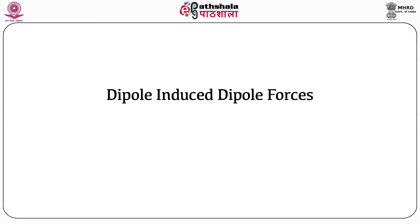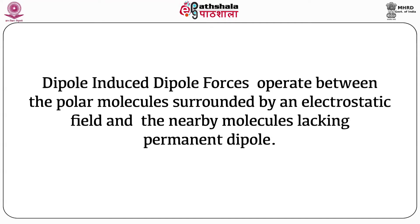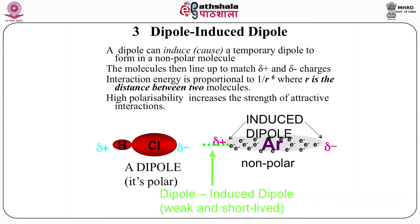The dipole-induced dipole forces operate between polar molecules surrounded by an electrostatic field and nearby molecules lacking a permanent dipole. The electrostatic field of the polar molecule shifts the electron density in the nearby molecule, causing a polarization in the electrically neutral molecule — this is an induced dipole. For example, phenylalanine or tryptophan, which have pi electrons, are polarizable amino acids compared to isoleucine, which has no pi electrons. The interaction energy between a polar molecule with a permanent dipole and a molecule lacking one is proportional to 1/R⁶, where R is the distance between the two molecules.